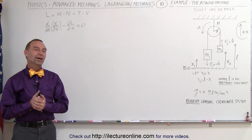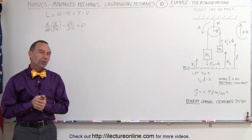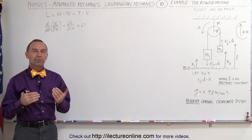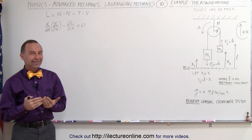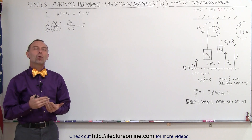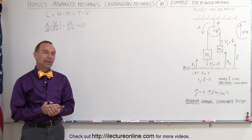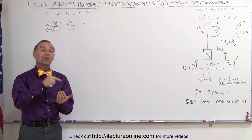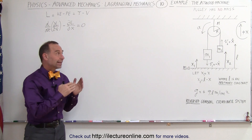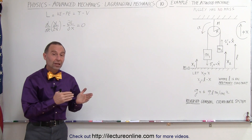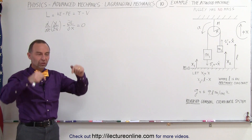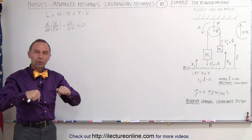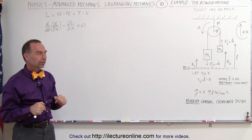Welcome to ElectronLine. One of the most confusing parts of using the Lagrangian is the generalized coordinate system. In the previous two examples when we did the Atwood machine, we had the positive x direction in a downward direction.